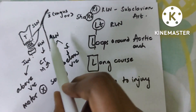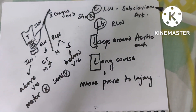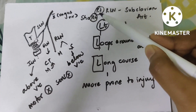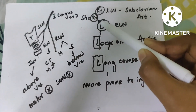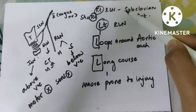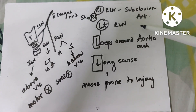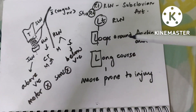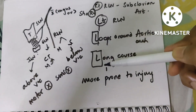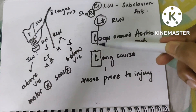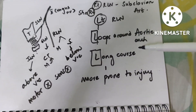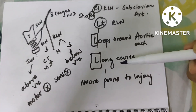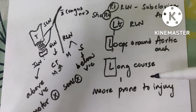There are two recurrent laryngeal nerves: right and left. The right recurrent laryngeal nerve takes a short course and loops around the right subclavian artery. The left laryngeal nerve takes a long course, looping around the aortic arch, and is more prone to injury because of its long course and proximity to important structures.